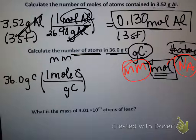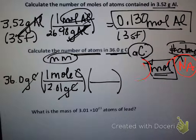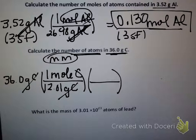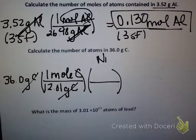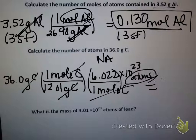The molar mass of carbon from the periodic table is 12.01 grams per mole. With grams canceling, I've converted to moles of carbon. Now I apply Avogadro's number as the second conversion factor: for every one mole of carbon there are 6.022 times 10 to the 23rd atoms. Putting moles on the bottom and atoms on top, moles cancel and my final unit is atoms. The calculation is: 36.0 times 6.022 times 10 to the 23rd, divided by 12.01.